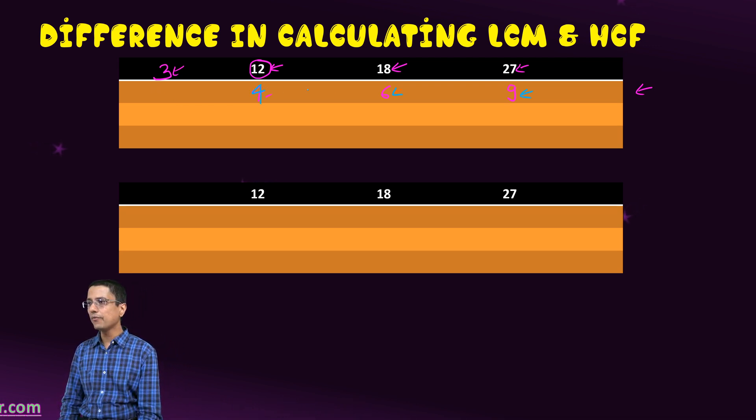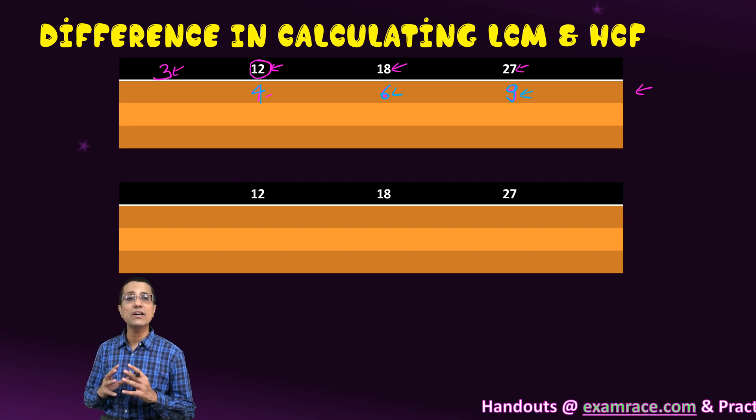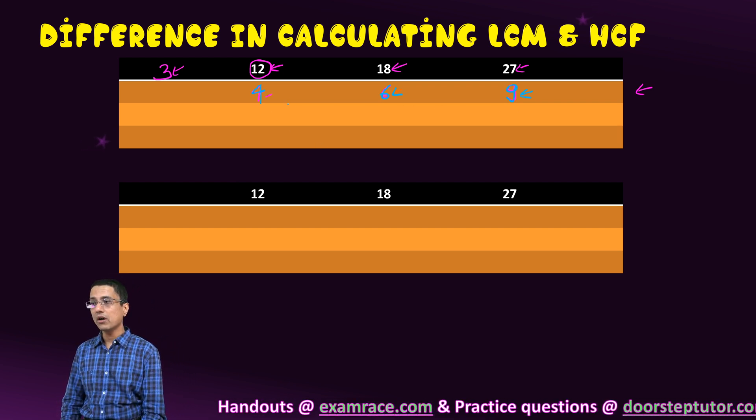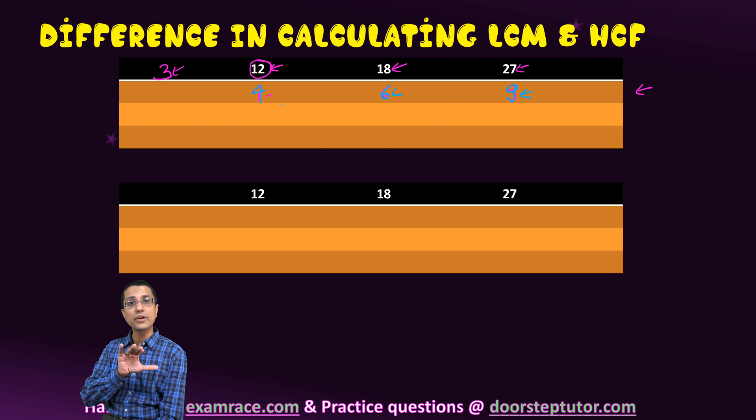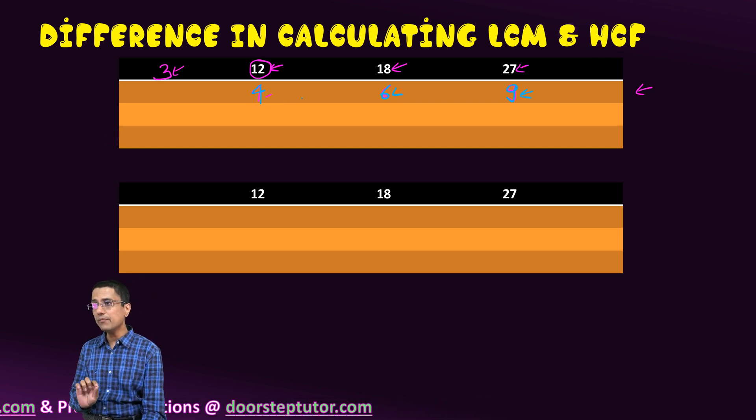After that, between 4, 6, and 9, we are not able to find any other common factors. Between these three numbers, all three of them taken together - we're not taking two of them, we're not taking any one of them, we're taking them all together.